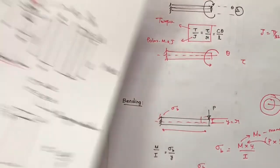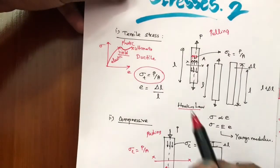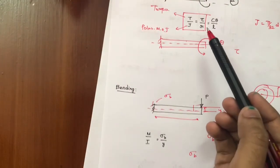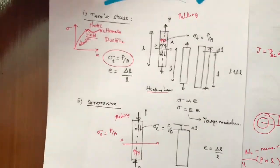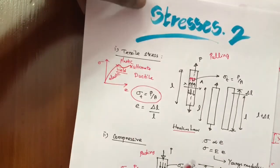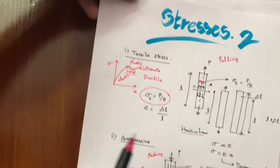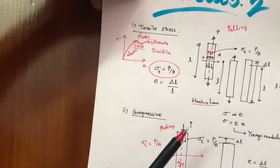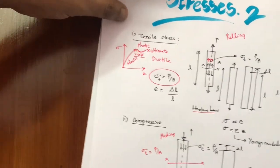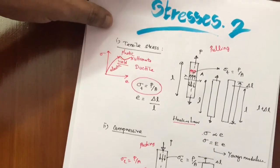So these are the five major stresses: tensile, compressive, direct shear, torsional, and bending. By using these stress formulas and the application of loads, we can design elements. We'll see examples in the next video. Thank you for watching — please subscribe to my channel.